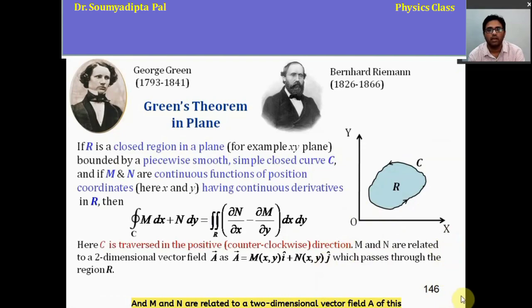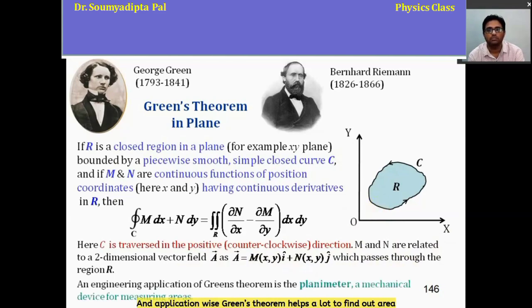Here the direction of the line integral is counterclockwise or positive direction. And m and n are related to a two-dimensional vector field A of this form, which passes through the region R. Application wise, Green's theorem helps a lot to find out area or size of any profile in engineering. This theorem is actually implemented in planimeter, which is a mechanical device for measuring areas. Next, let's discuss the Green's theorem in more details.